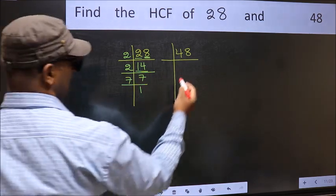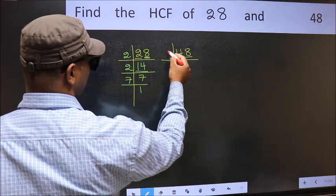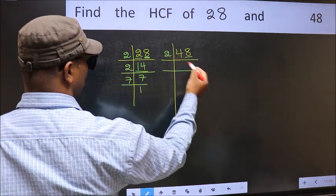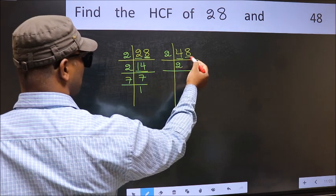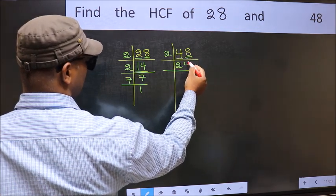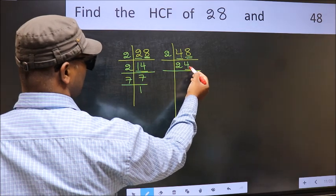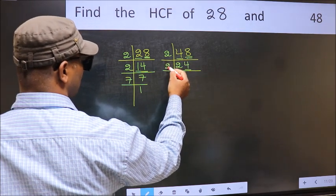Now the other number. Last digit is 8, even, so take 2. First number is 4. When do we get 4 in the 2 table? 2 times 2 is 4. The other number is 8. When do we get 8 in the 2 table? 2 times 4 is 8. Now last digit is 4, even, so take 2.